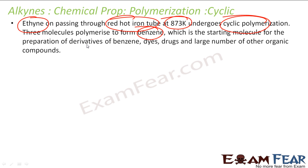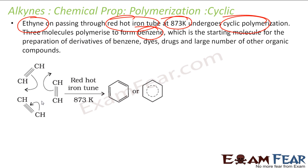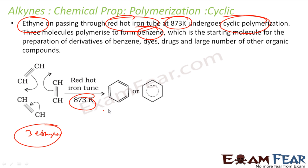Benzene is the starting material for a lot of other drugs. In this reaction, I take three ethyne molecules and pass them through a red hot iron tube at 873 Kelvin to get benzene. This bond breaks, these bonds break, and with that you get benzene.